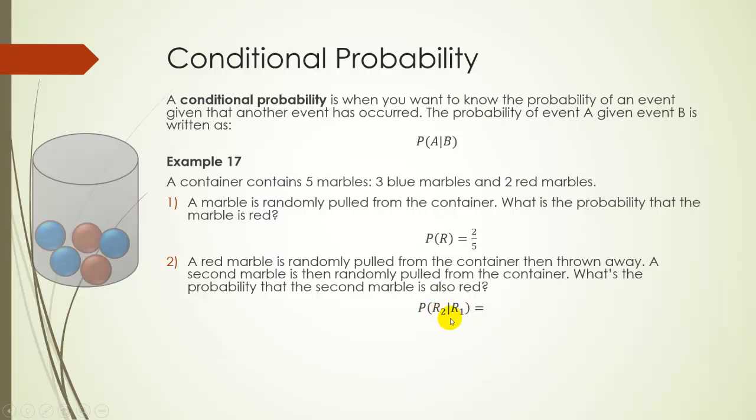So what's the probability that the second marble that we pull out is also red? One way to indicate that we're doing one thing and then another thing is using these subscripts, but you don't have to use them. We just want to know the probability that our second marble is red, given that our first marble was red, and again, we threw away the first marble.